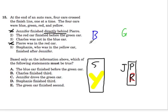So there's only two cars left, and it told us that Charles was not in the blue car. So that means that Jennifer has to be in the blue car.